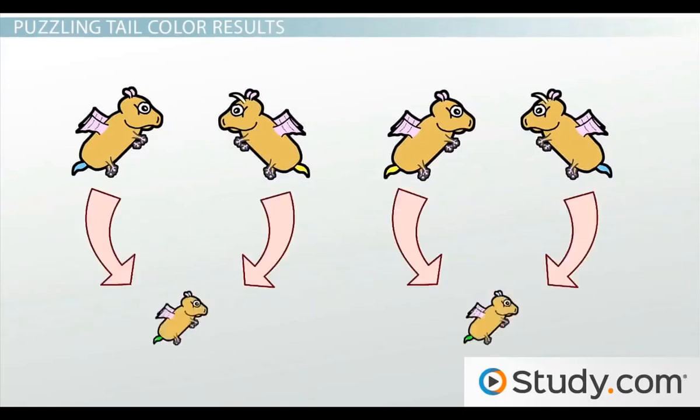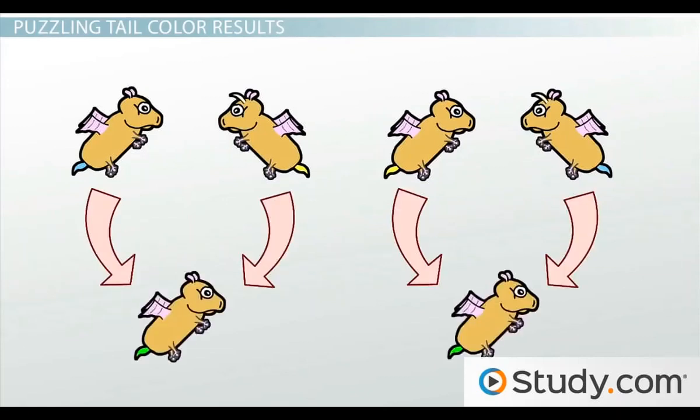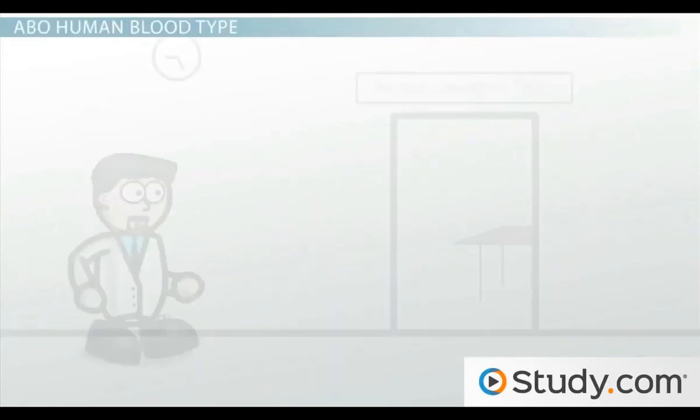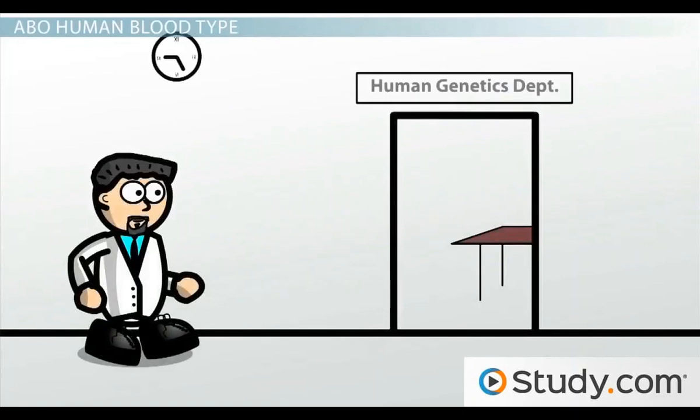But when he mates them together, he gets green-tailed hamsters. So he's thinking, what the heck is going on? Adrian decides he's going to walk down the hall and consult with his human geneticist friend, Ben, to see if he can help him explain these really strange results.